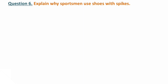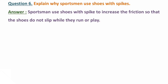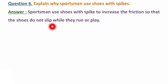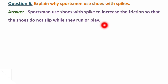Next question: explain why sportsmen use shoes with spikes. Woh spikes ke saath shoes ko kyu use karte hain? Answer is: sportsmen use shoes with spikes to increase the friction so that shoes do not slip while they run or play. Shoes ke andar spikes kyu hote hain? Because spikes kya karenge — friction jo hai na, woh increase karenge, taaki jab bhi player khel raha hai, tab woh slip na ho jaye.